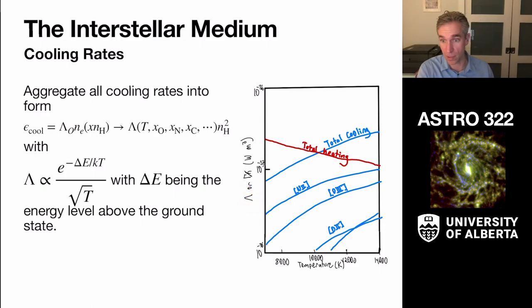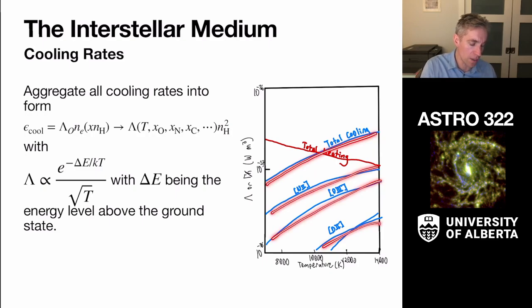And that's sort of illustrated here, where this is the cooling rate lambda, and I've drawn those in the blue lines, as a function of temperature, this function actually increases as the temperature goes up. And so all these cooling lines go up